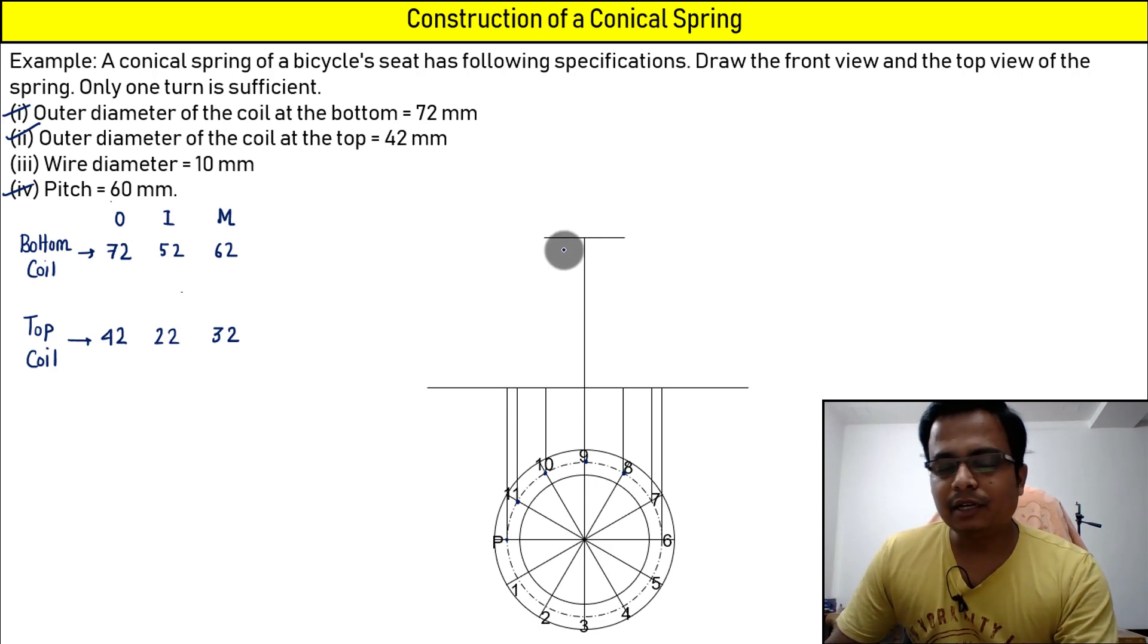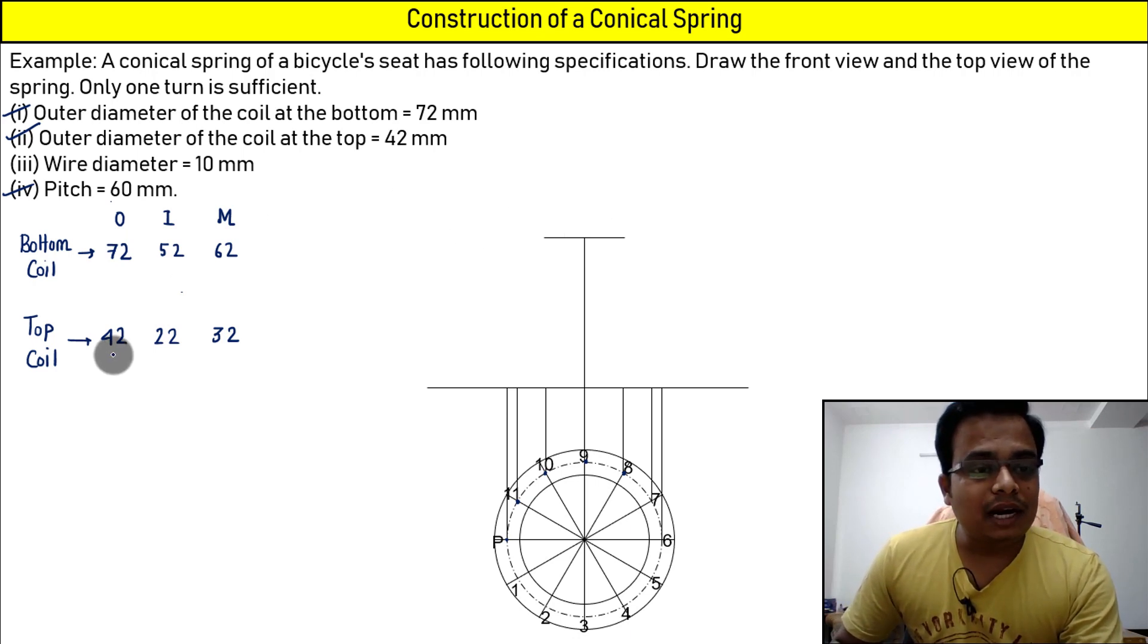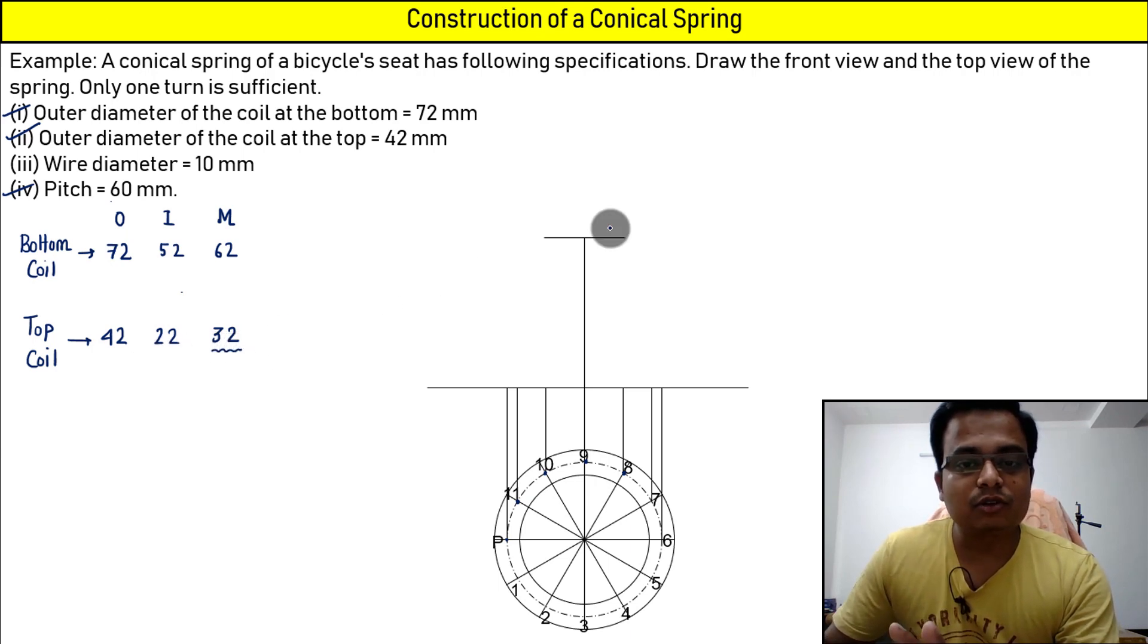And then just make a line. Let me tell you something about this line: this is where the top coil is. And that top coil, by the way, is having an outer dia of 42, inner dia of 22. But we are concerned with this mean diameter, so this has got to be 32.